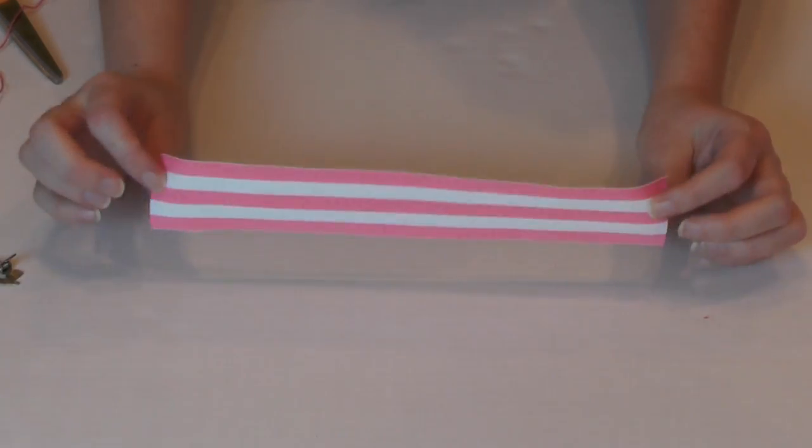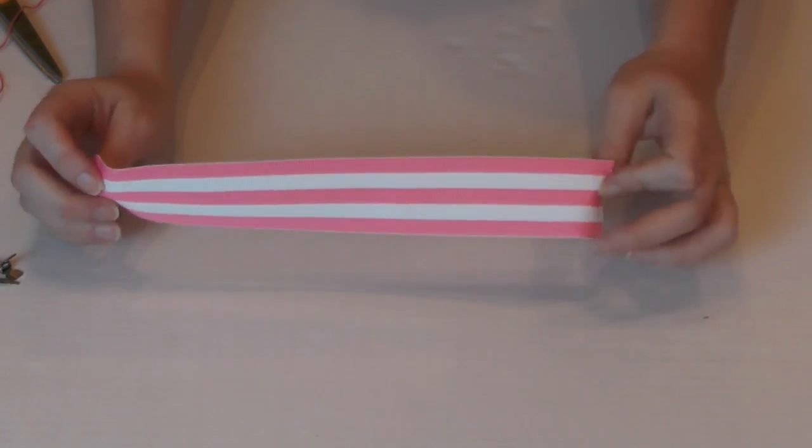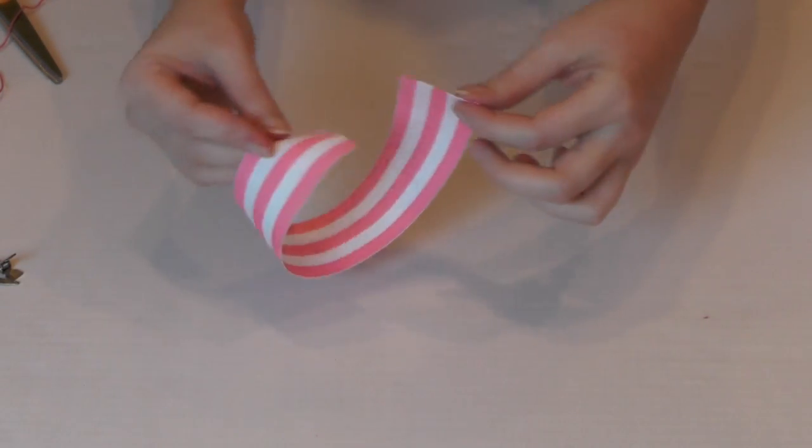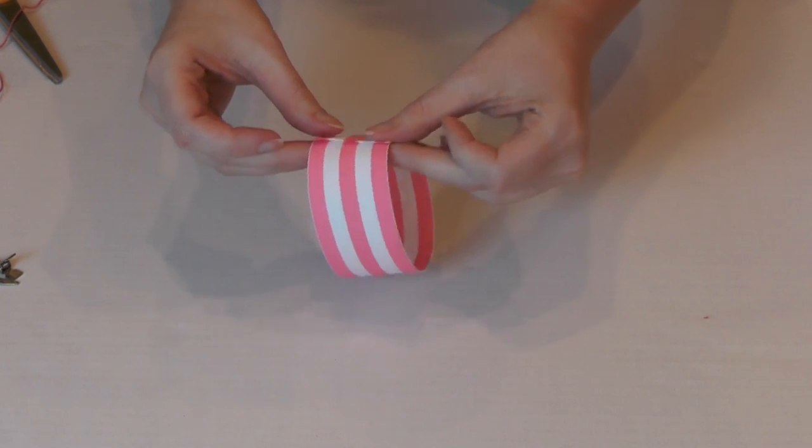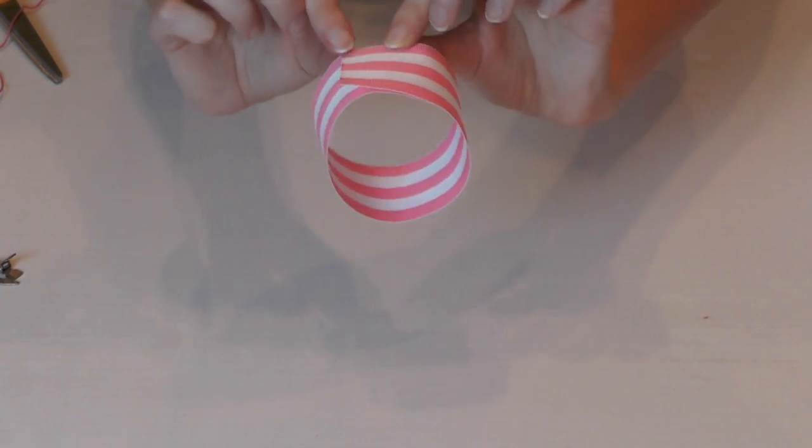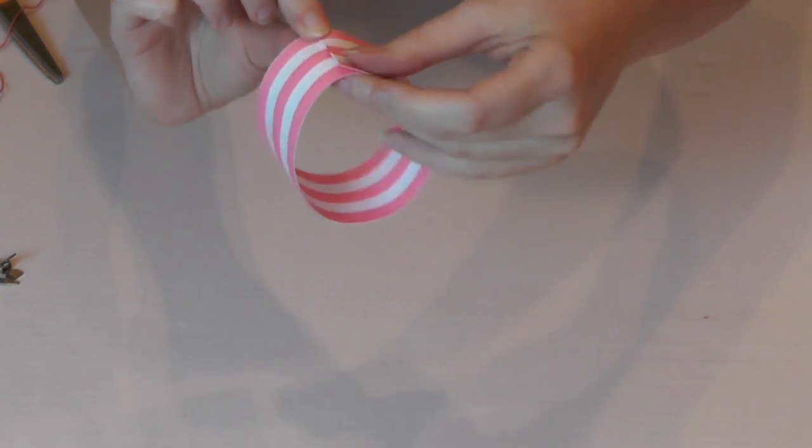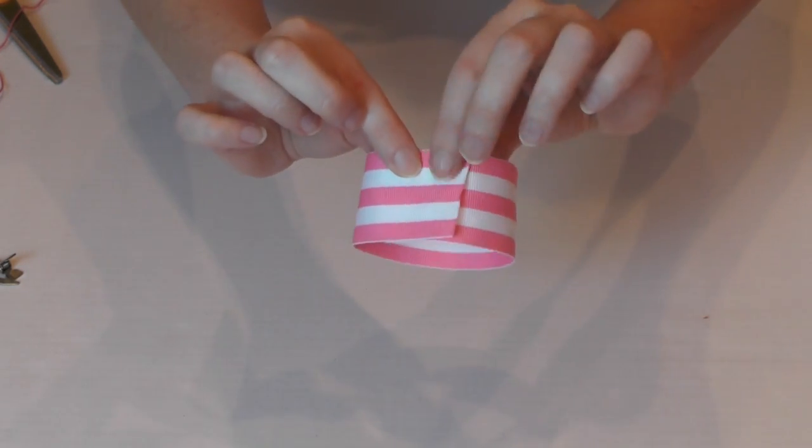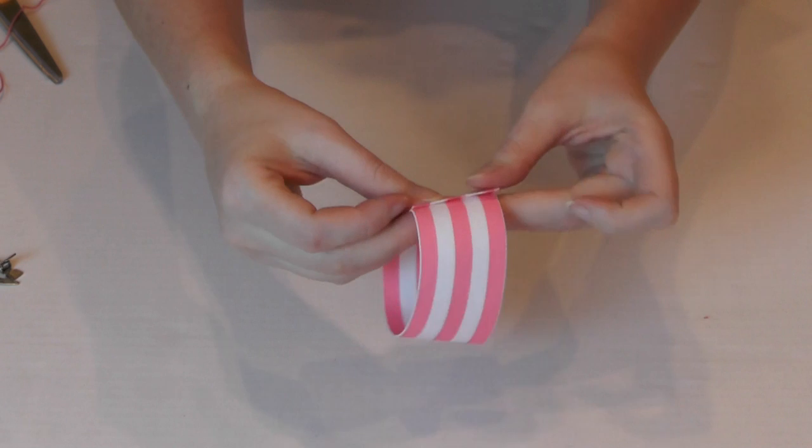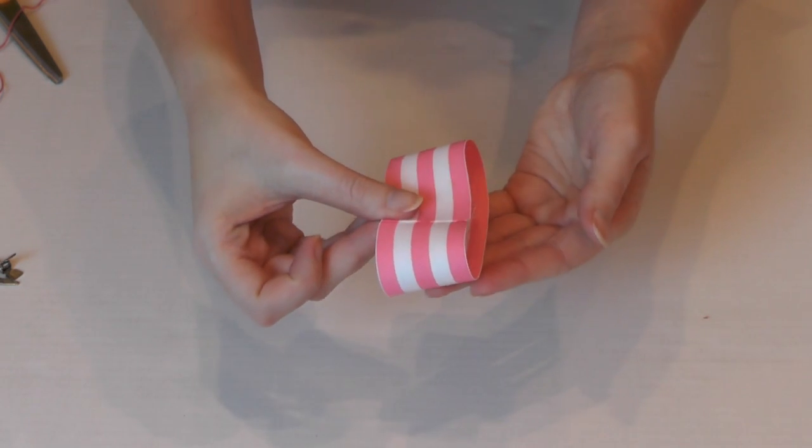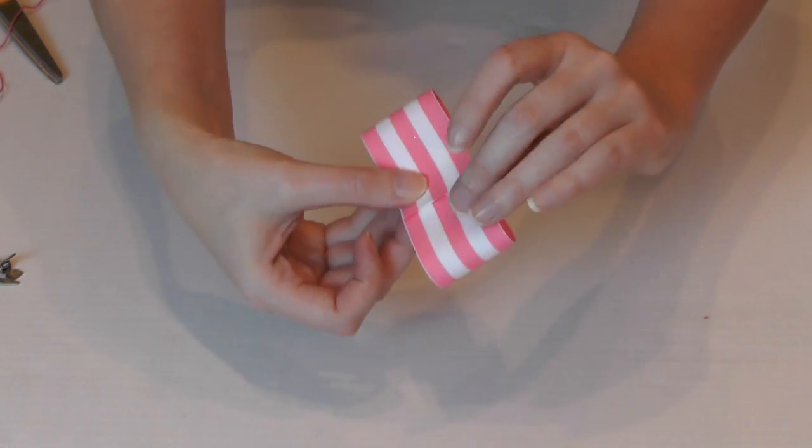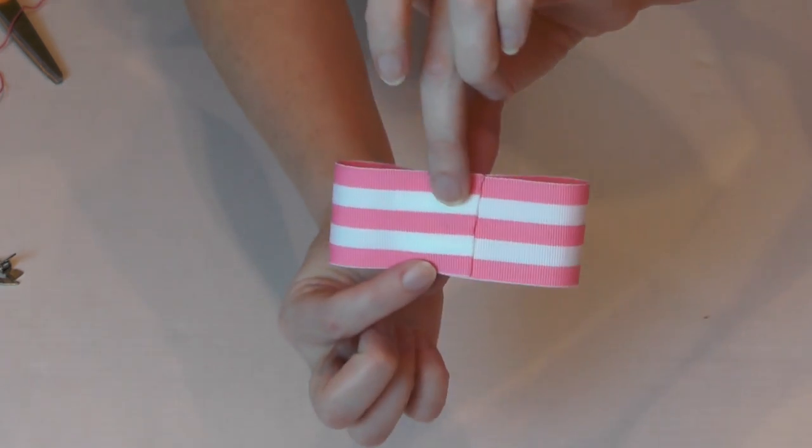All right, this is going to be very simple to follow. All you do is take it, form a circle just like this, and then we're going to press. This is the back, right here, where you see the crease of the ribbon, or the ribbon ends. You're just going to take it and lay it flat in the center, just like that.